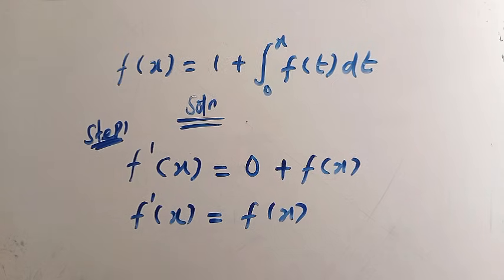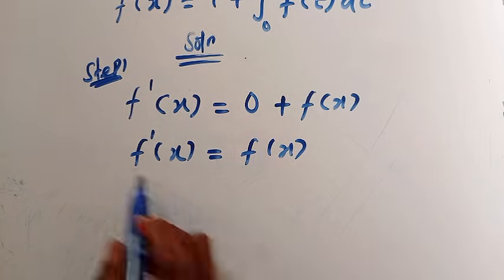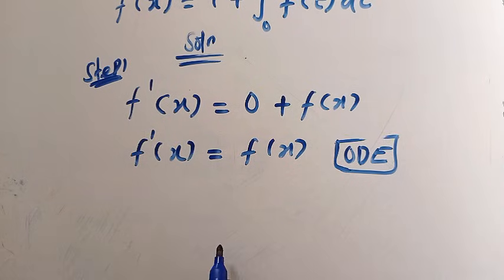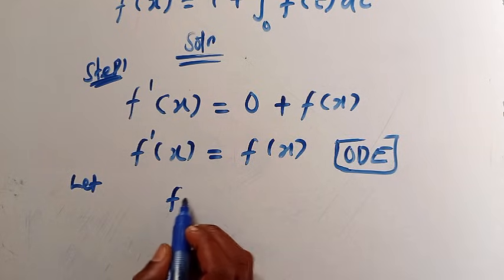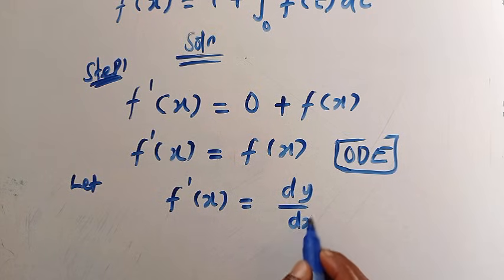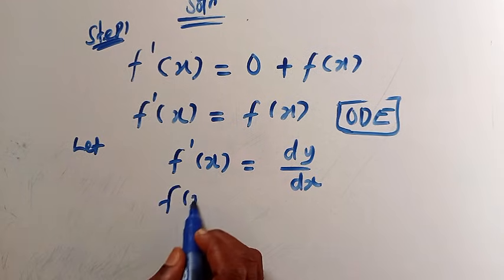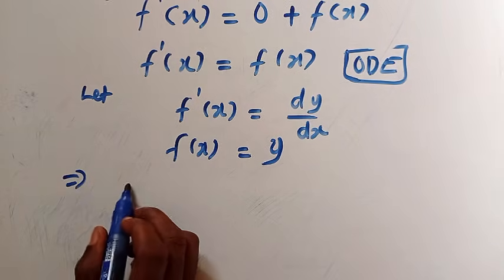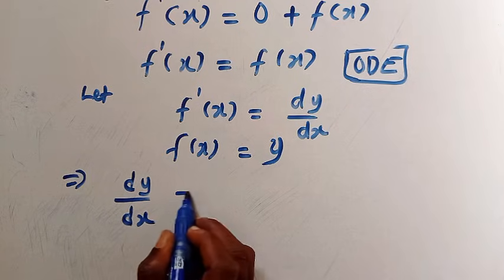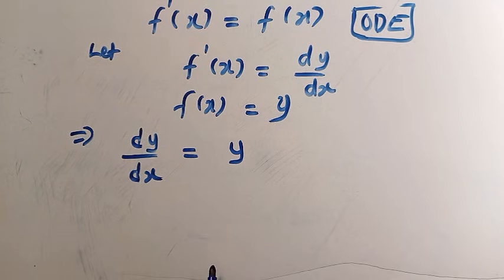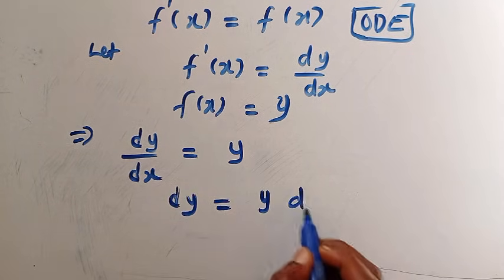But we have to find the value of f of x here. This is just like an ODE — ordinary differential equations. Suppose I let f prime of x be equal to dy/dx for easy solving, and I let f of x be equal to y. So therefore, we are going to have dy divided by dx equals y. Then let's cross-multiply: we have dy equals y dx.